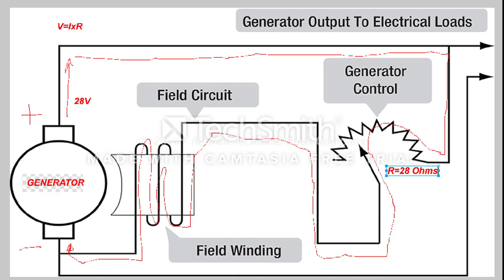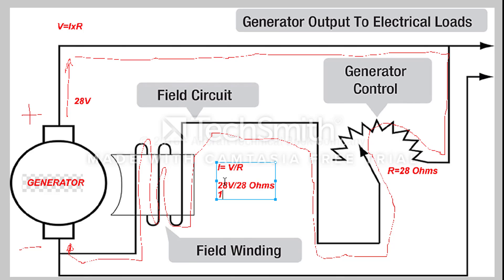Using Ohm's Law, we would say that the current is equal to voltage divided by resistance. Therefore, 28 volts divided by 28 ohms equals a current of around 1 amp. The current moving from the generator through the variable resistor gives us a current through the field coil or field winding that provides a magnetic field, which gives us our output voltage of 28 volts.